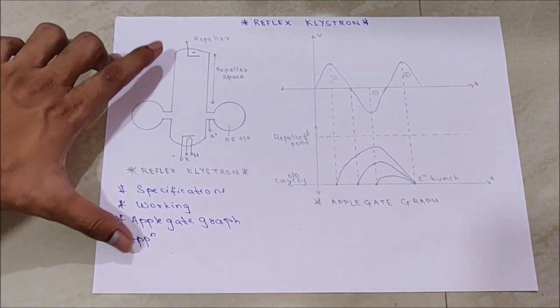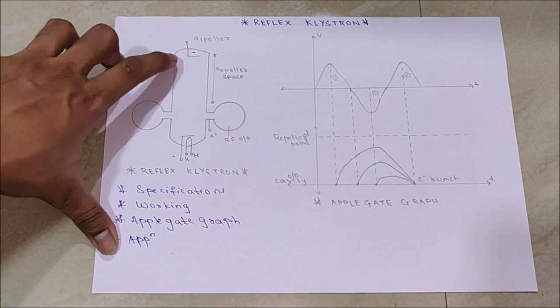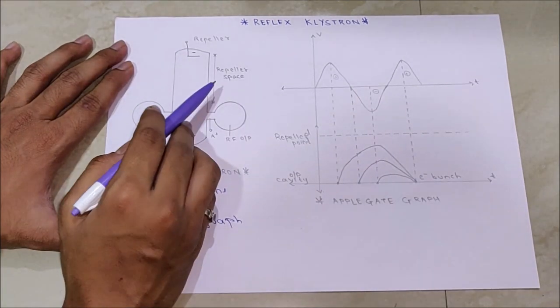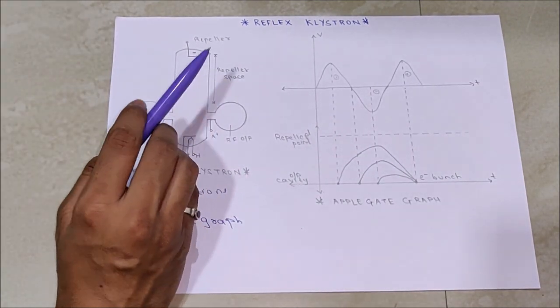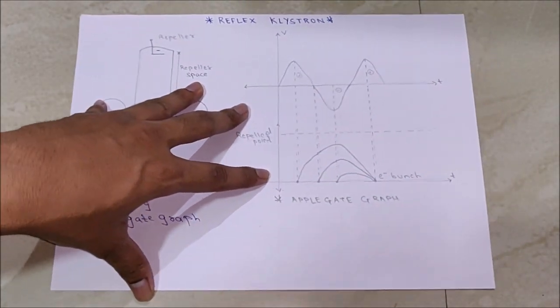For negative cycle, as it is already negative and the repeller is also negatively charged, it will repel and travel less distance in the repeller space. Using the Applegate graph,